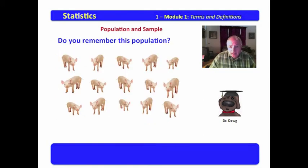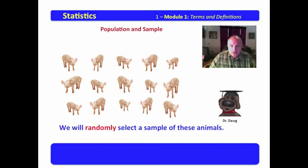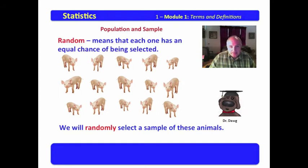Do you remember this population? I bet you recognize them. This is the entire population of albino singing pigs. Now, what we're going to do is randomly select a sample of these animals. Do you catch the new word I just used? Randomly. Random means that each one has an equal chance of being selected.